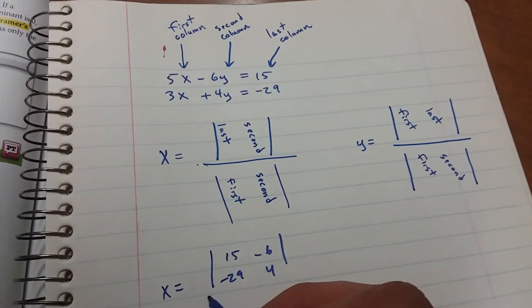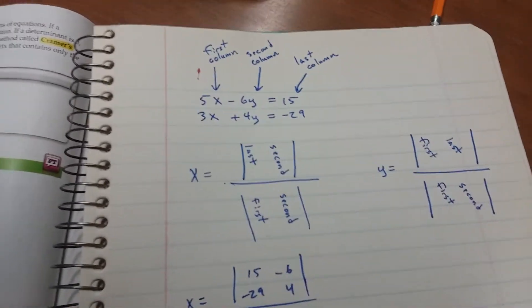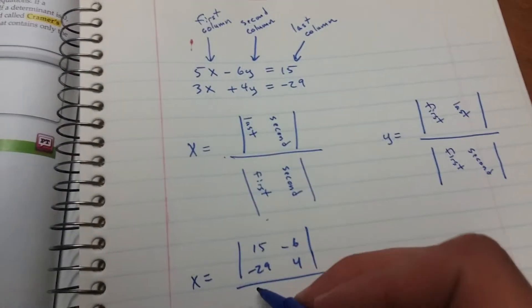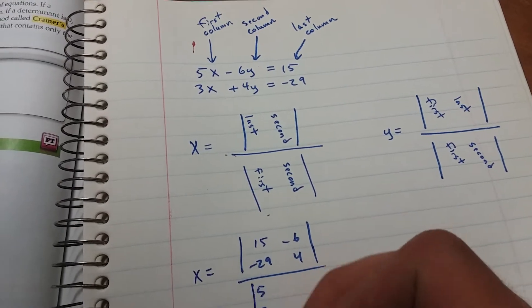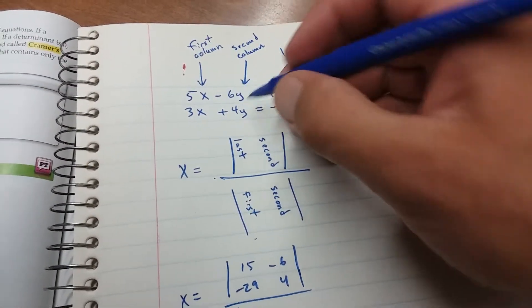And then that is all over your first and second, 5, 3, and negative 6, 4.